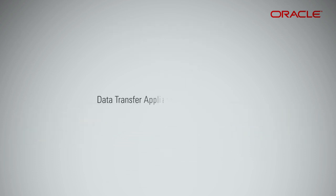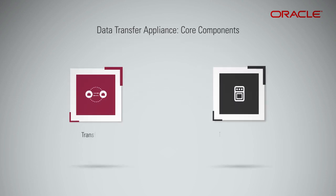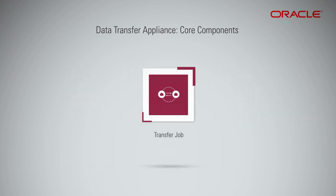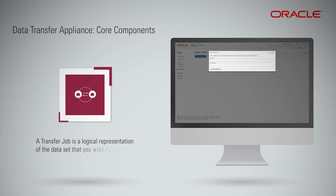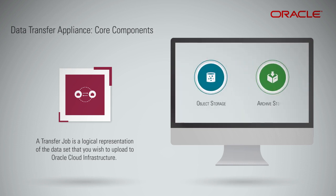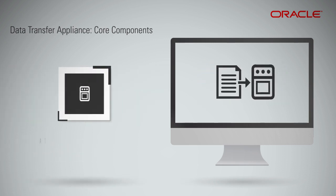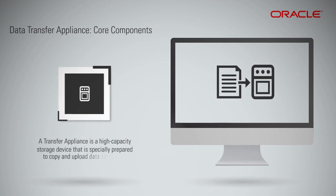Let's talk about the components of Data Transfer Appliance now. Data Transfer Appliance has two components: Transfer Job and Transfer Appliance. Just like Data Transfer Disk, you first need to create a transfer job using the OCI console — specify a job name and identify the object storage or archive storage bucket where you wish to upload your data. A transfer appliance is a high-capacity storage device that is specially prepared to copy and upload data securely to Oracle Cloud Infrastructure. You copy your data to one or more appliances and ship these appliances to Oracle to upload your data.